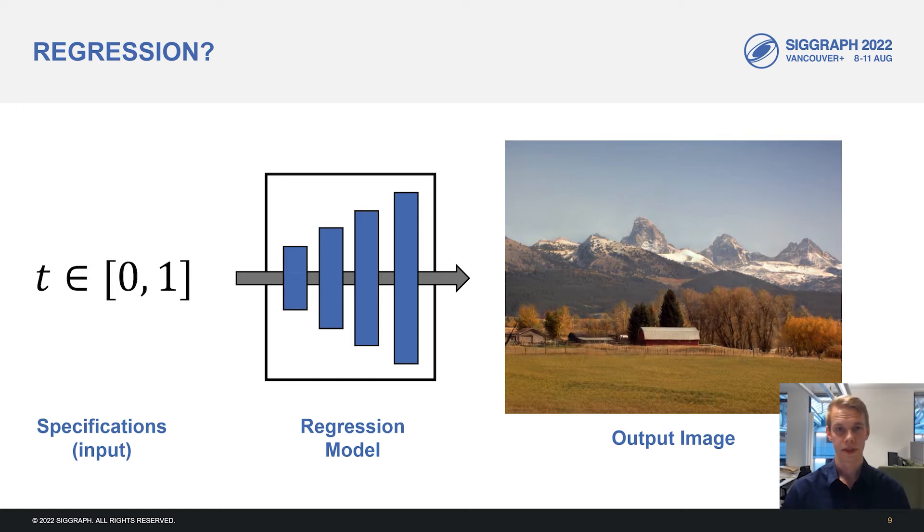An immediate thought might be to use regression models to solve this problem, whereby an input timestamp t and a regression model like a convolutional neural network is used to predict the output image. But this doesn't really work for a few reasons. First, this setup encourages memorization, which is incompatible with the independent control that we want of the output. But more fundamentally, due to the randomness of our inputs, subsequent frames can look quite different and there's not really a smooth mapping from the input to the output. And given limited model capacity, this most likely results in blurry outputs. And finally, regression models are not really suitable for producing a distribution of plausible outputs given a single input time, which is something we want of our model.